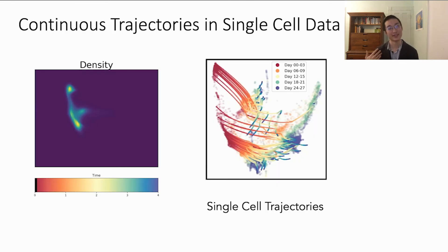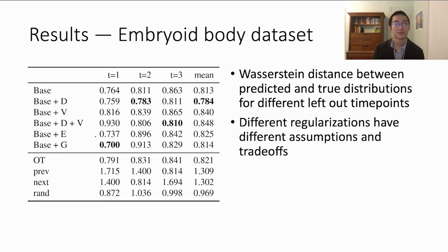So using these penalties allows us to impute the density at any time point or track the likely ancestry or lineage of individual cells. Here, visualized on the embryonic body dataset. You can see here the density flowing over time following these paths.